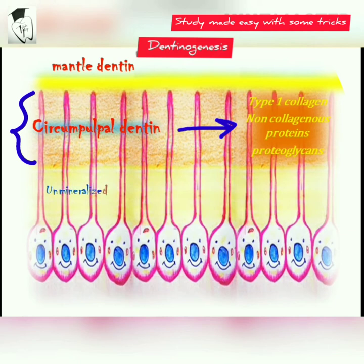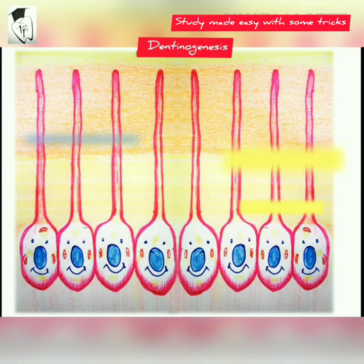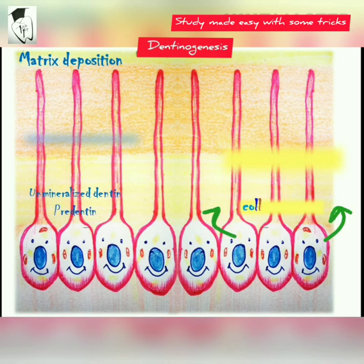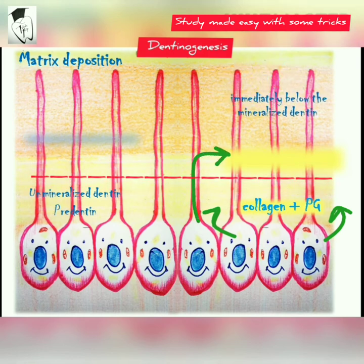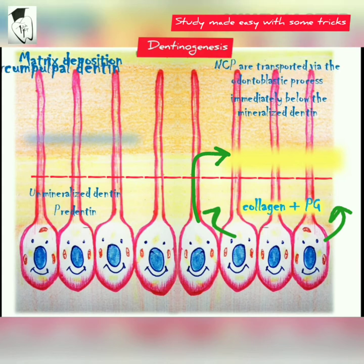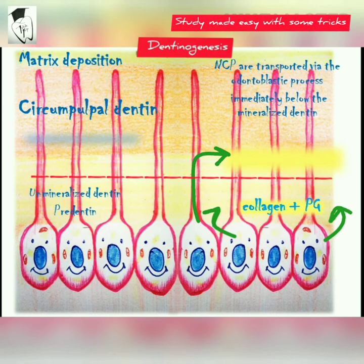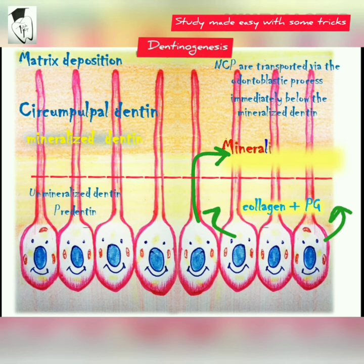Circumpulpal dentine matrix deposition differs in that the predentine layer — immediately near the cell bodies — consists of collagen and proteoglycans, while the non-collagenous proteins are transported via the odontoblastic processes and deposited at the mineralization front in predentine immediately below the mineralized dentine. Thus, circumpulpal dentine has two compartments: predentine and mineralized dentine.